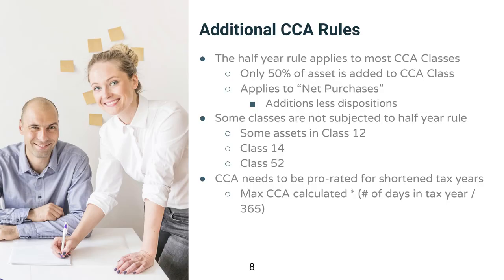Now let's talk about some additional CCA rules. The first is the half-year rule. The CRA doesn't know exactly when you bought your items — some people buy at the beginning of the year, some at the end. So to average everything out, they assume everyone claims half a year's CCA, as if you bought it in the middle of the year. This half-year rule applies to your net purchases, meaning additions less dispositions.